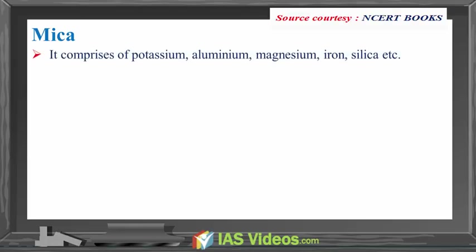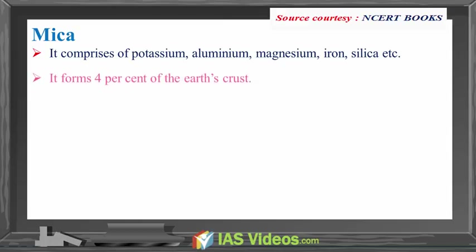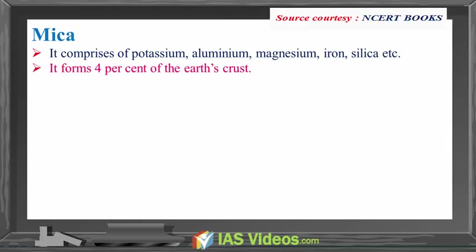Mica: it comprises of potassium, aluminum, magnesium, iron, silica, etc. It forms 4% of the earth's crust. It is commonly found in igneous and metamorphic rocks. It is used in electrical instruments.